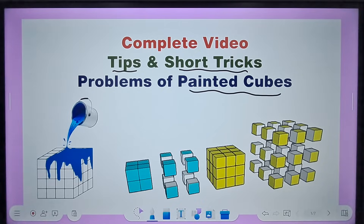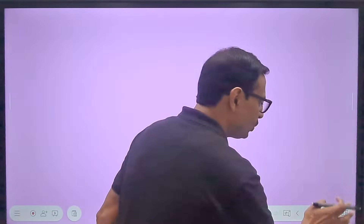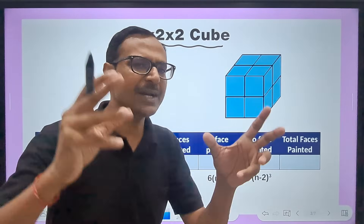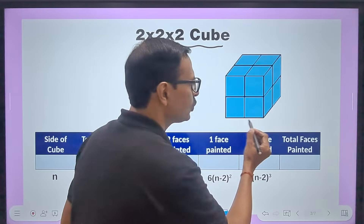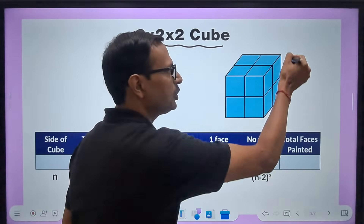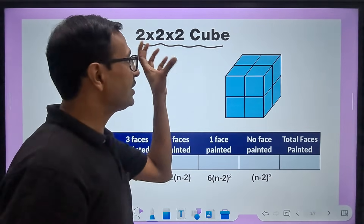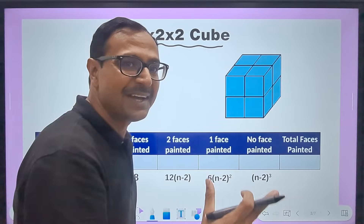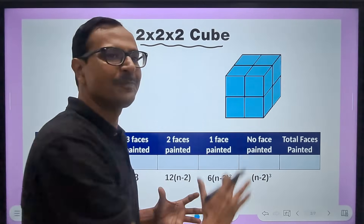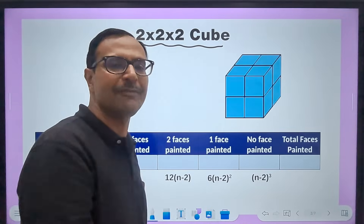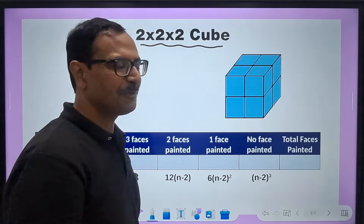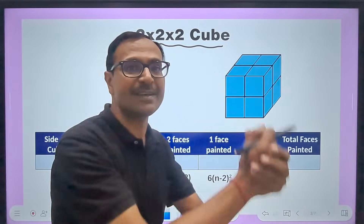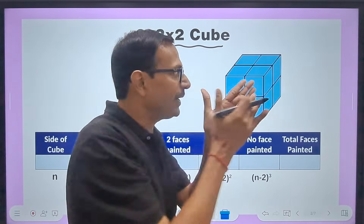The first thing you need to understand is that whenever you have a painted cube, this is a 2×2×2 cube. You have 2 cubes along the length, 2 along the width, and 2 along the height. So 2×2×2 cube — and if you multiply them, 2 times 2 times 2 is 8 — you get the total number of cubes formed when you cut it horizontally and vertically. So 8 cubes are formed.